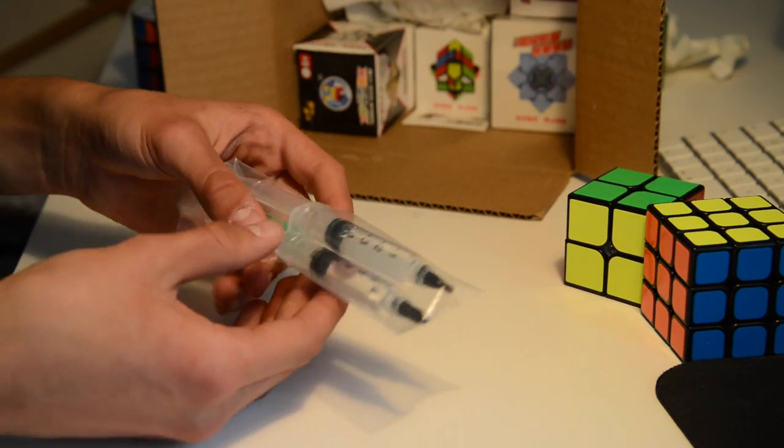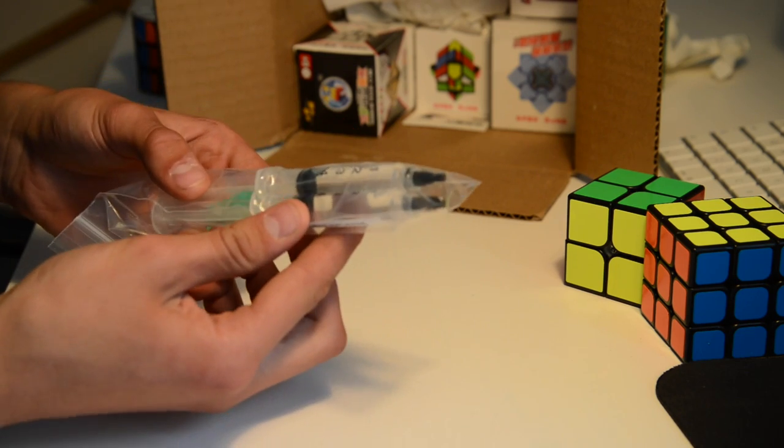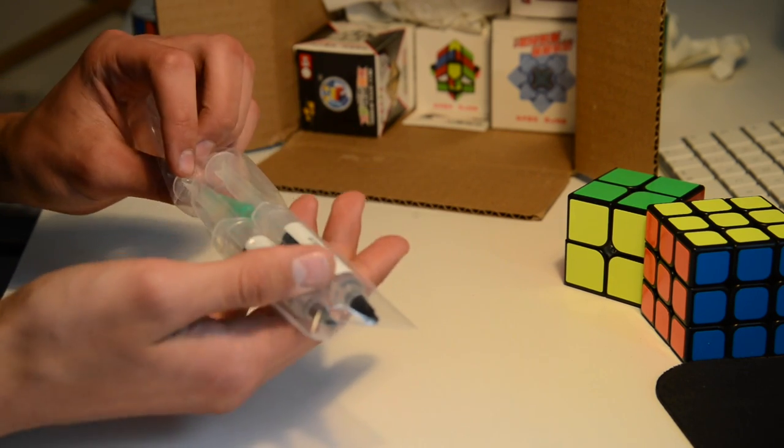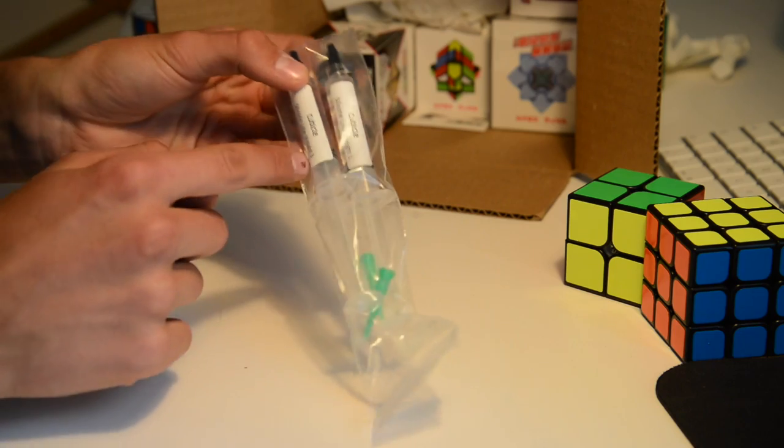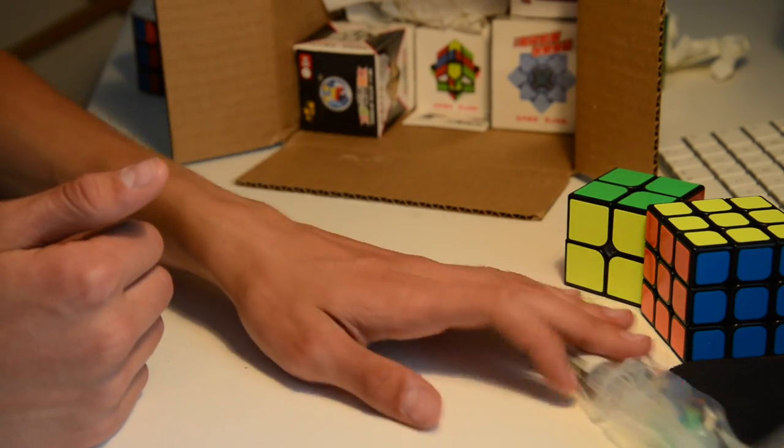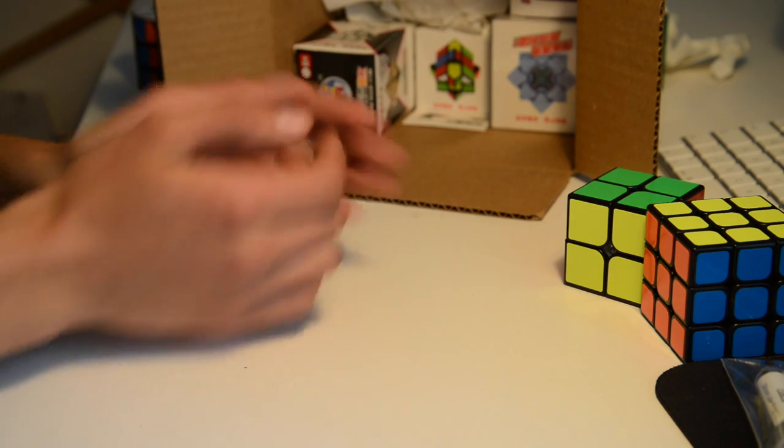Next up we have some lube, and this is weight 1 and 3. First try, and I'm going to use these for the cubes.